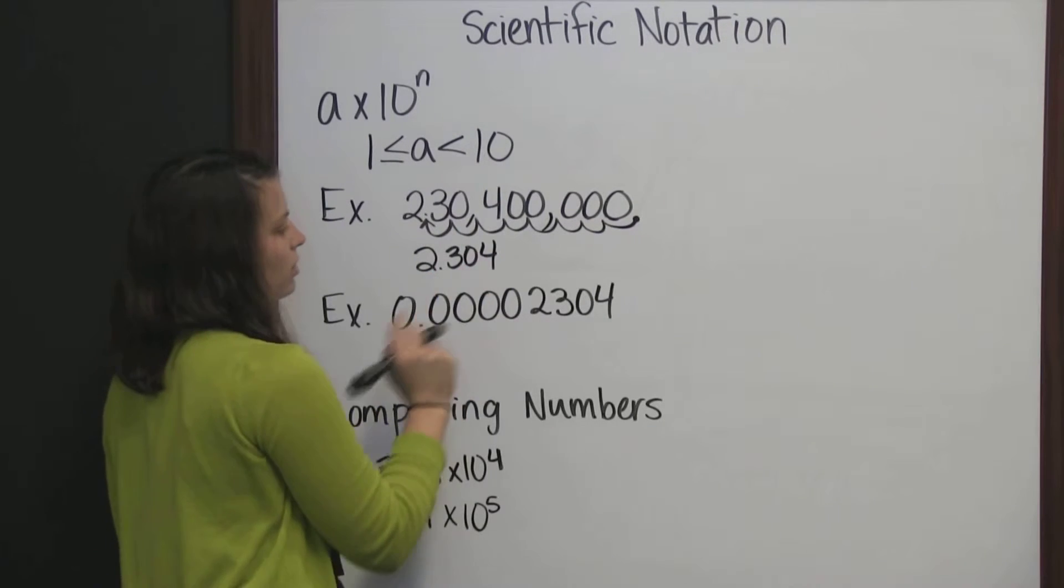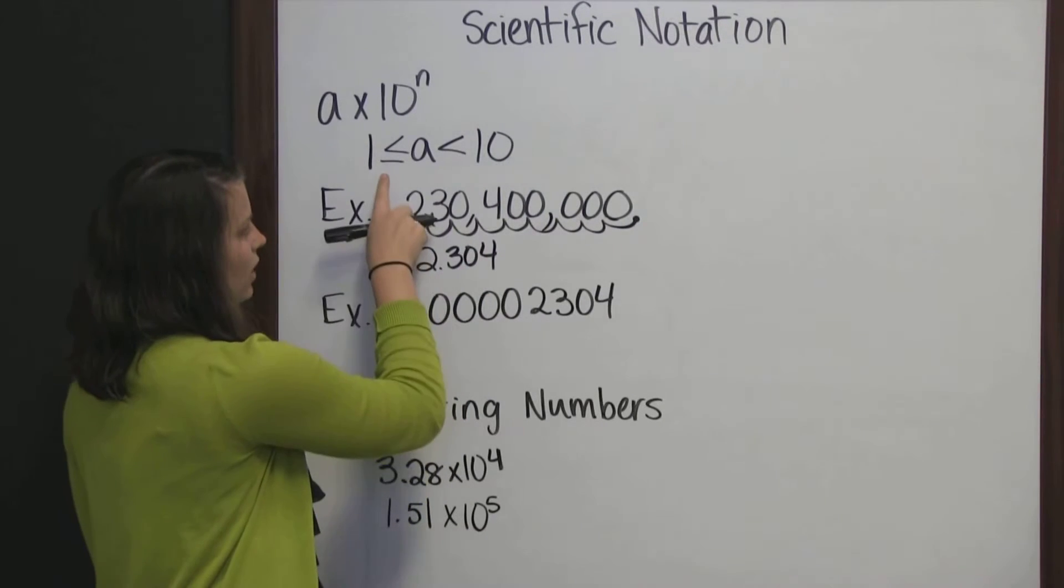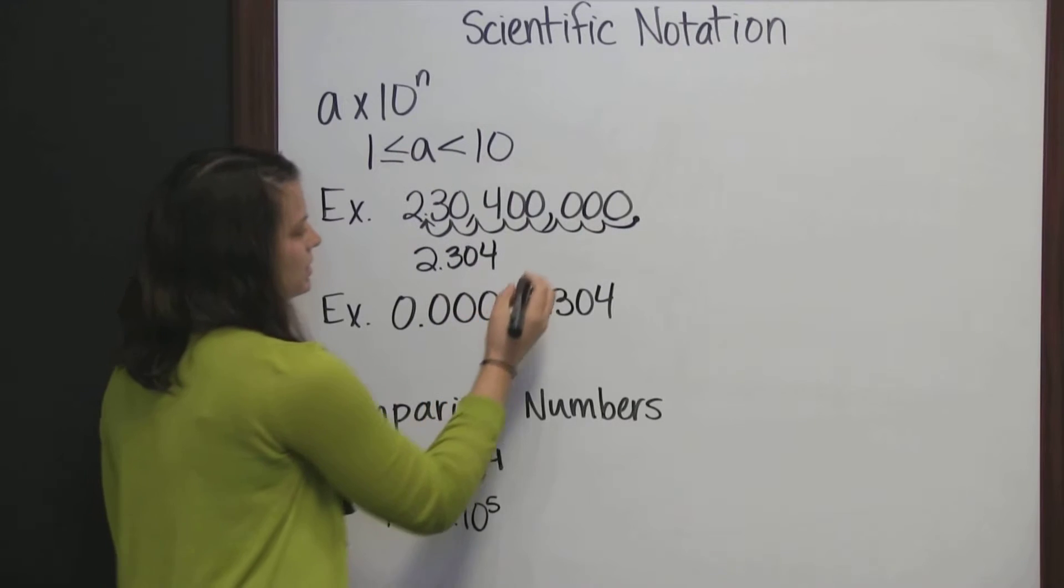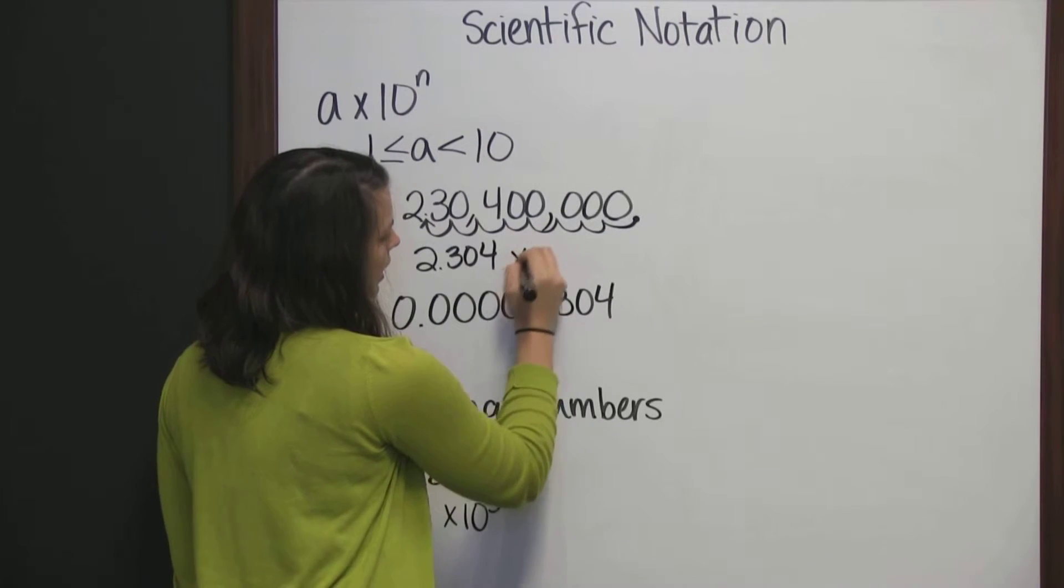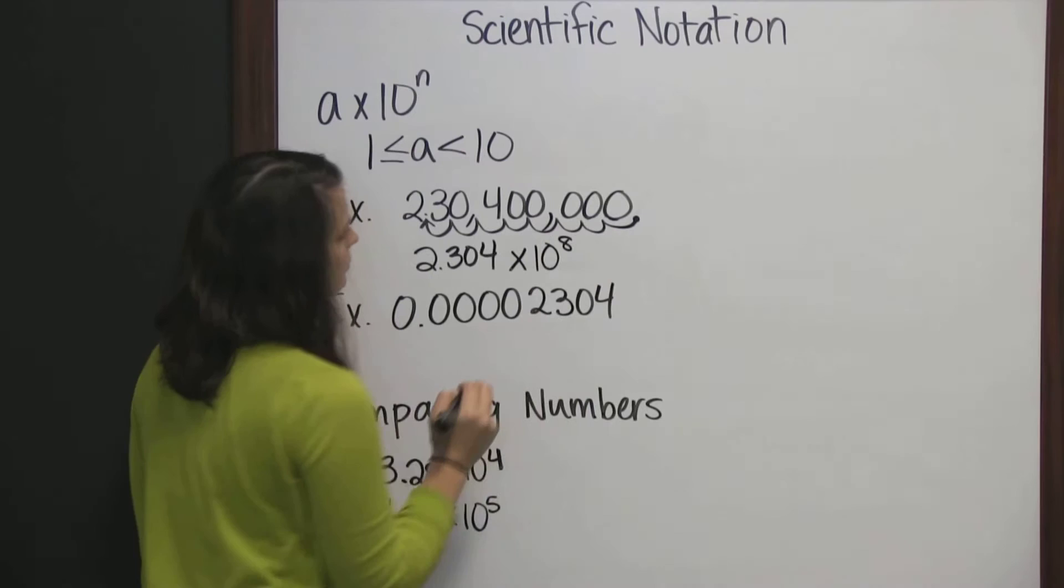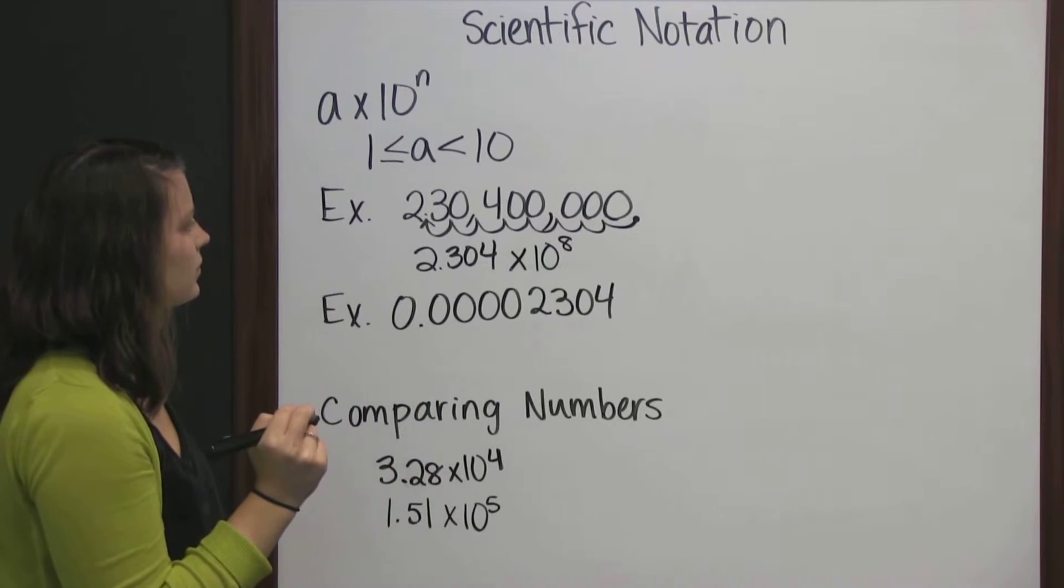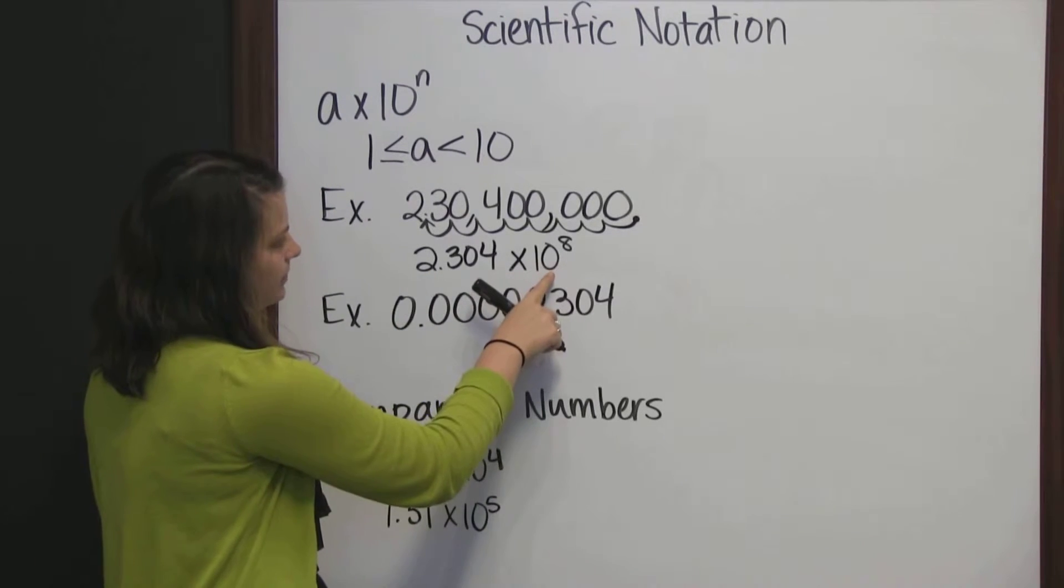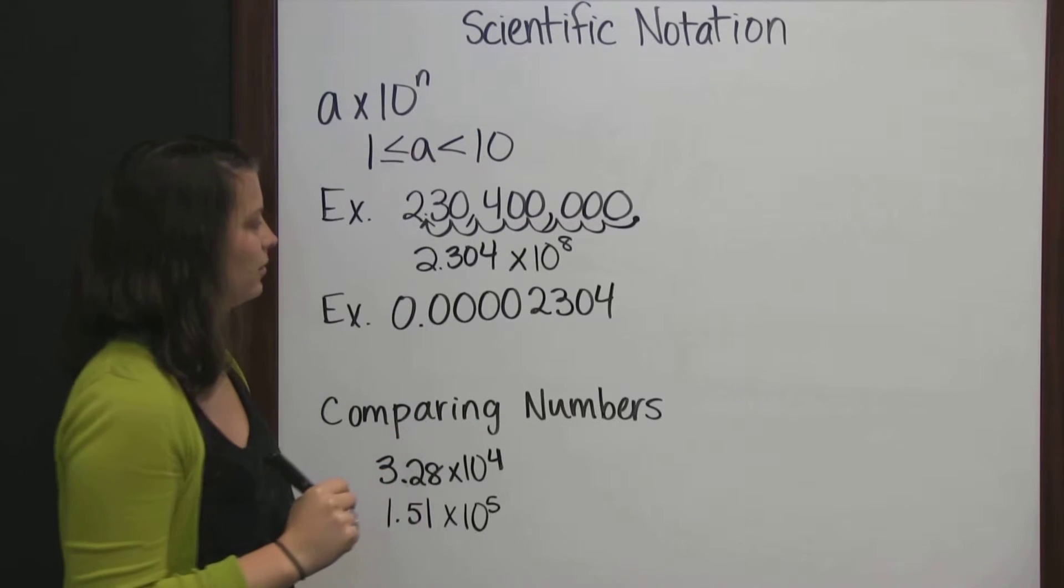2.304 is greater than or equal to 1, but less than 10. Times 10 to the 8th. And this number is the same as my original number.